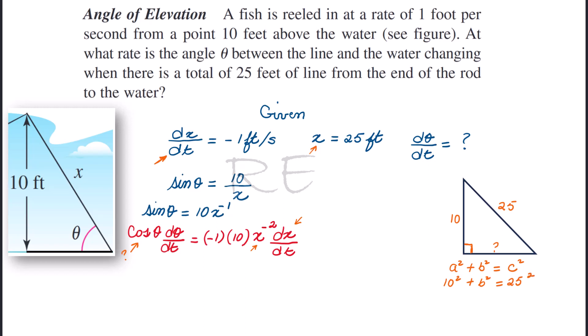a squared plus b squared equals c squared. Therefore, 10 squared plus b squared equals 25 squared. 100 plus b squared equals 625. When we subtract 100 from both sides, we get b squared equal to 525, which is really 25 times 21.